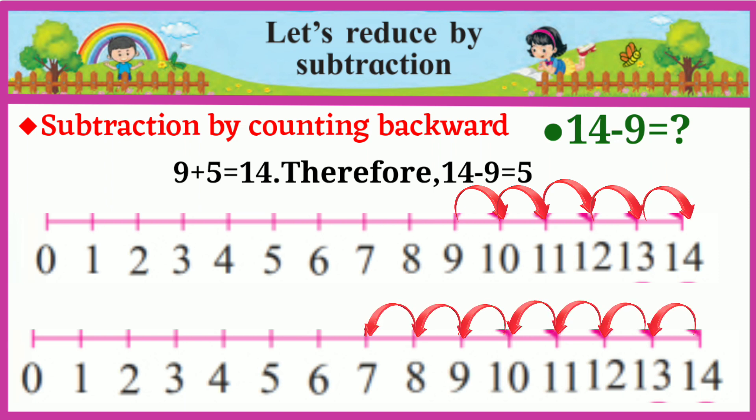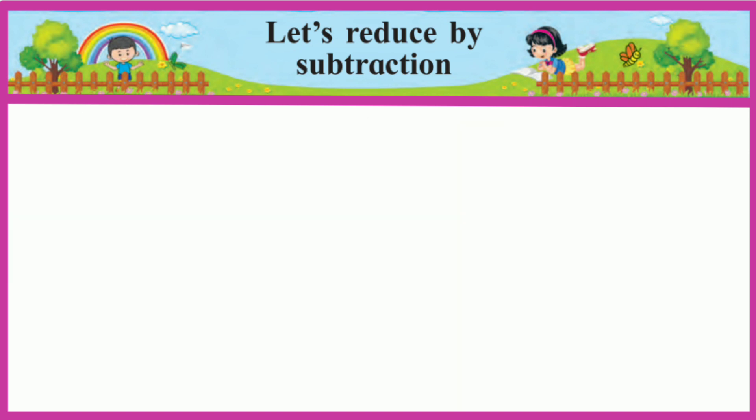In the first diagram, there were five jumps toward the right from 9 to 14. In the second diagram, nine jumps were taken toward the left from 14, which stopped at 5. Both methods give us the answer 5. Thus, subtraction can be done by both methods using the number line.